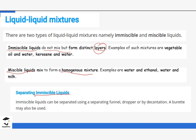Immiscible liquids can be separated by three methods. Method number one: we can use a separating funnel. We can use a dropper, and we can use decantation. We are going to discuss these three ways of separating immiscible liquids and then come up with a conclusion on which is the best method among the three.